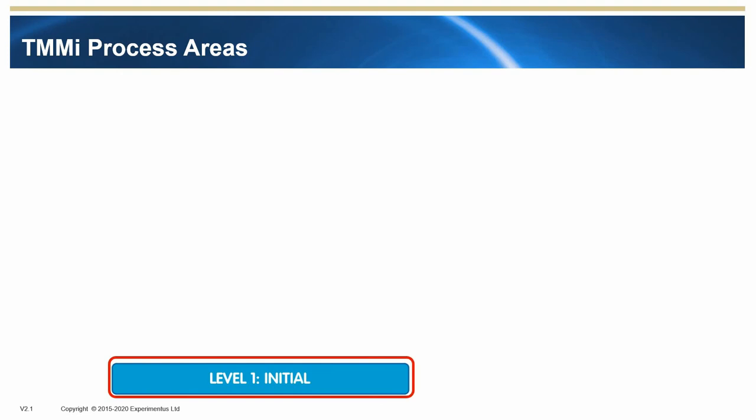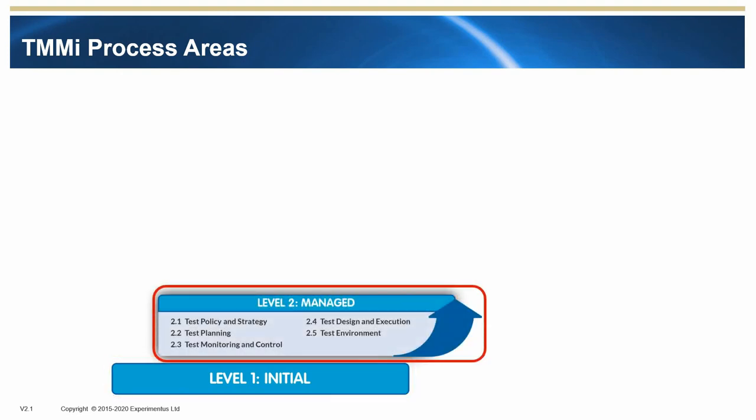TMMI Process Areas. Each TMMI Maturity Level contains several process areas. The process areas describe the procedures that are expected to be conducted to demonstrate good testing practice. There are no process areas at Level 1 of TMMI. At Level 2 there are five process areas: Test Policy and Strategy, Test Planning, Test Monitoring and Control, Test Design and Execution, and Test Environments.